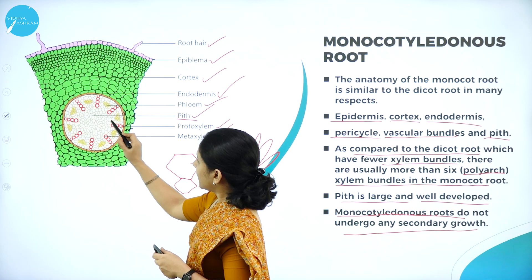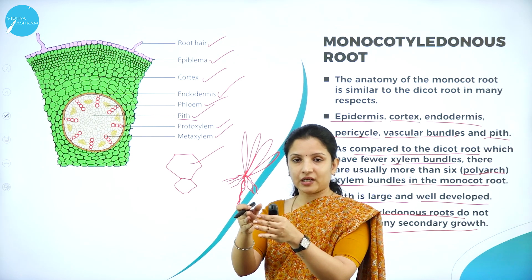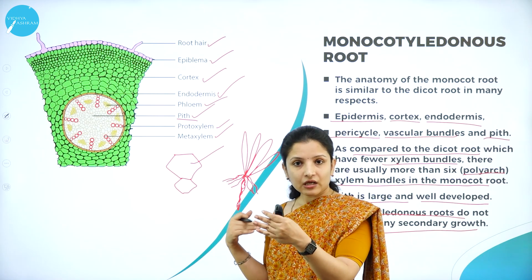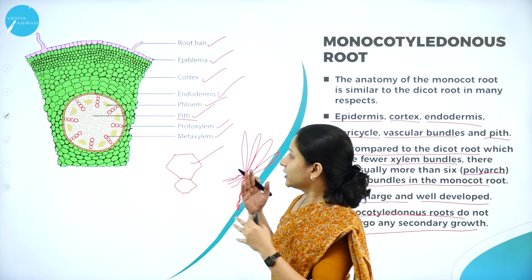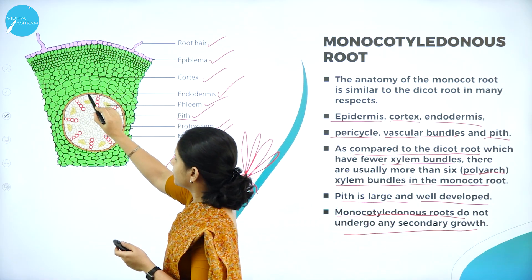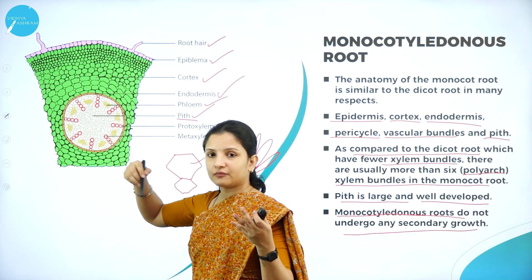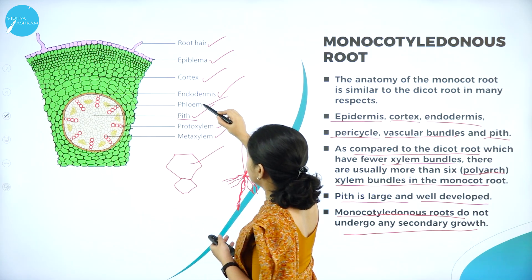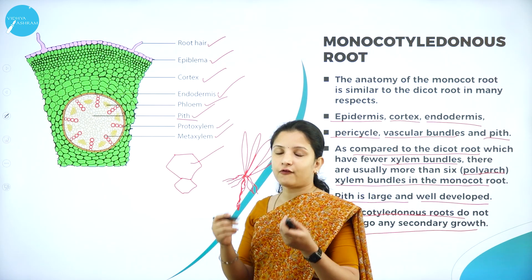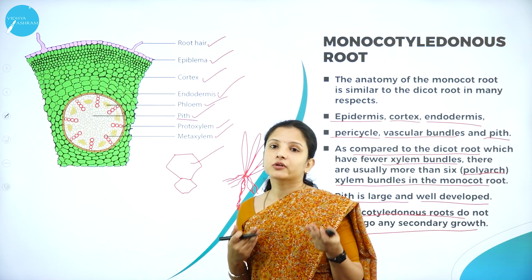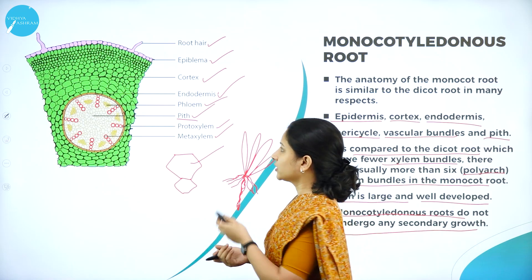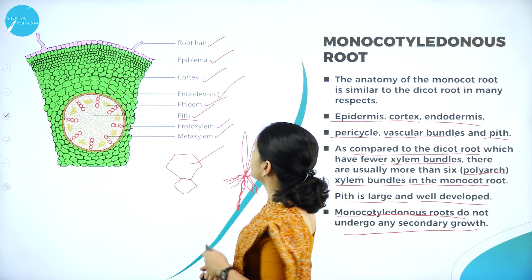In the dicot root, the protoxylem is present towards the center of the pith and the metaxylem is present towards the outside. By looking at the stele — all cells below the endodermis including the phloem, xylem, and pith — it is easy to distinguish between a monocotyledonous root and a dicot root. This is the key identifying feature of the monocotyledonous root.